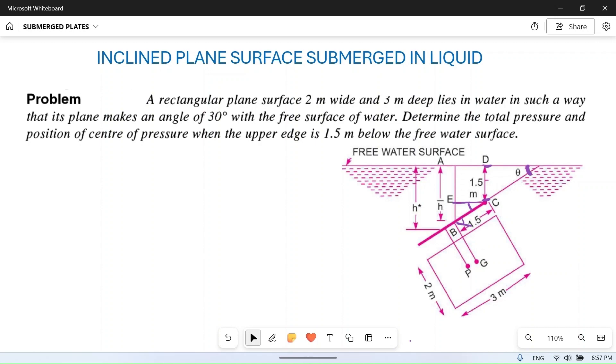What will be the total pressure? Total pressure which is equal to force F equals ρgAh̄. Here, ρ is density of the liquid which is water, so 1000 kg/m³. g is 9.81 m/s². Area A is 2 into 3, which equals 6 m². h̄ is depth of center of gravity of this plate from free surface.